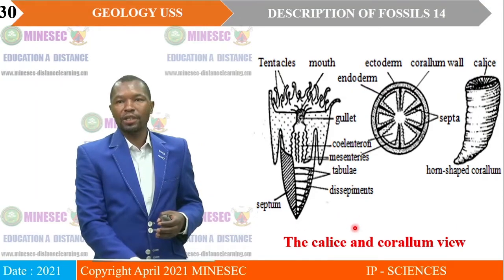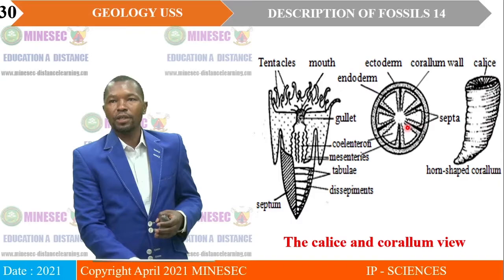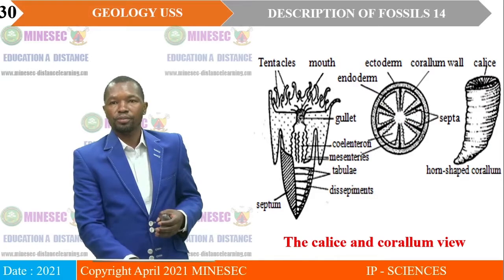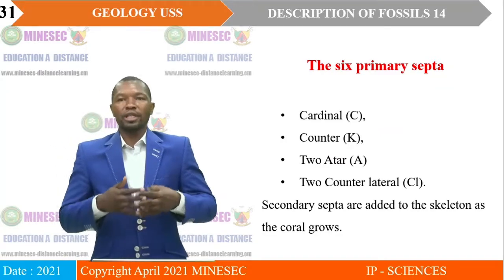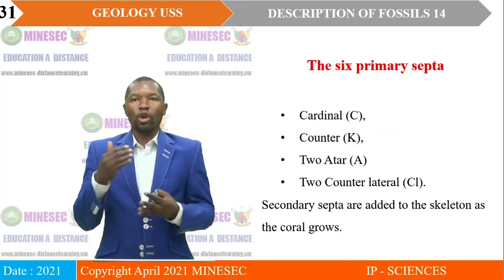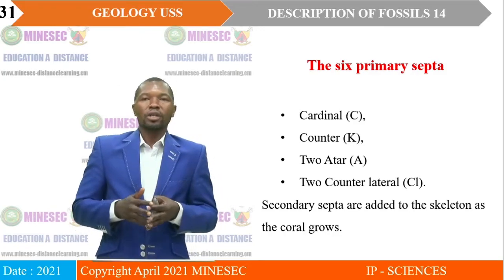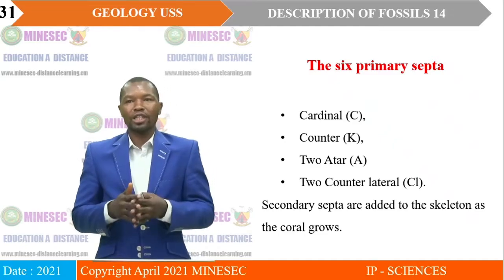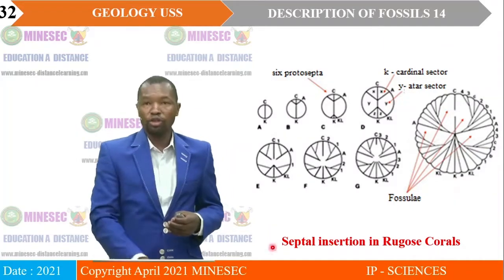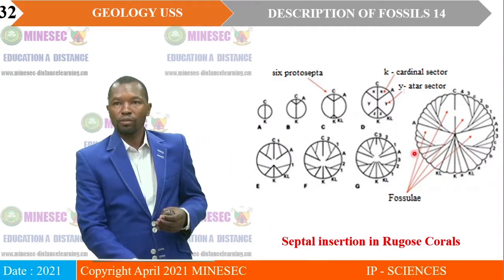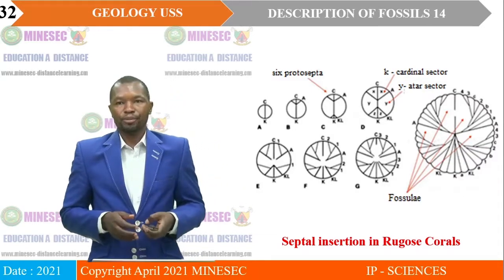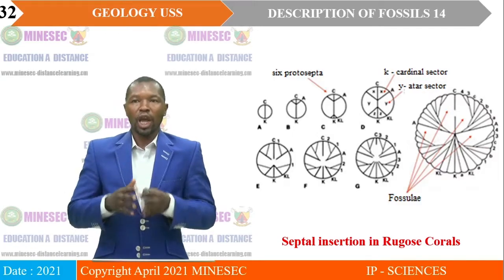The calyx and corallium build: you see the septa projecting from the calyx, the corallium wall, then the ectoderm and endoderm. The six primary septa in Rugose corals: we have the cardinal (C), the counter (K), the two alar (A), and the two counter-lateral (CL). These are represented in the structure, isolated and drawn in different parts to represent the six calyx septa. That is the septa insertion in Rugose corals — very important.